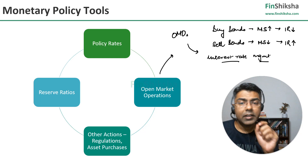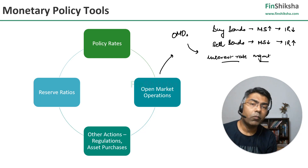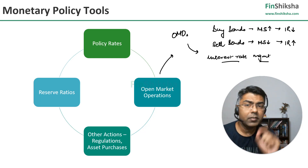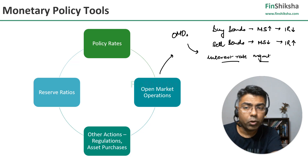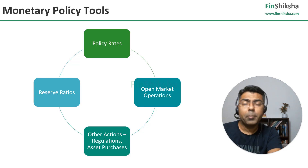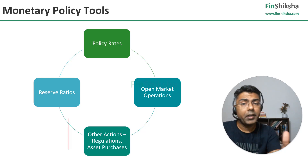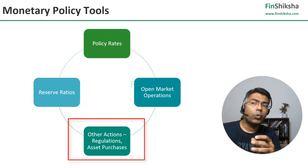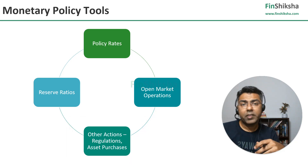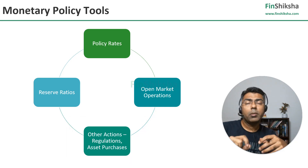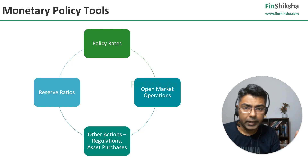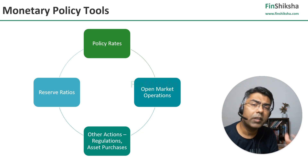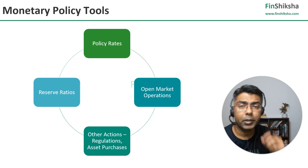The idea of open market operations is to ensure interest rate range management — managing money supply is the objective. It's important to understand this because there's another thing RBI does which is very similar. RBI could also have direct regulations, coming in and saying that the cost of borrowing for a particular sector should be reduced, so a certain amount of lending must be done to that sector — RBI can define that, which automatically reduces the cost of borrowing for that sector.